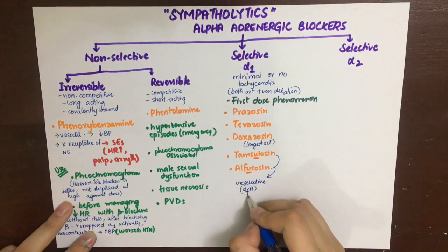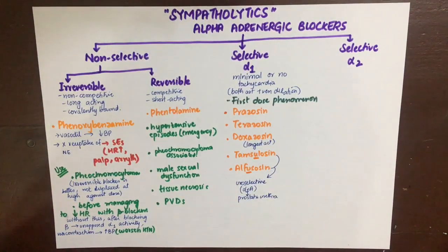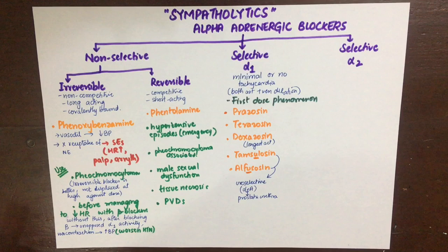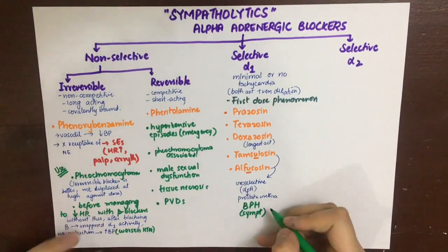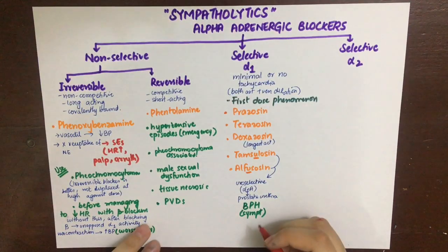Alpha-1 receptors have subtypes: alpha-1a, alpha-1b, and alpha-1d. Alpha-1a is present in the prostatic urethra where it contracts the urethra. By blocking this receptor with alpha-1 blockers, we can treat benign prostatic hyperplasia (BPH) symptomatically to prevent urinary stasis and ease urination. Importantly, older males with BPH often also have hypertension, so a selective alpha-1 blocker addresses both conditions.